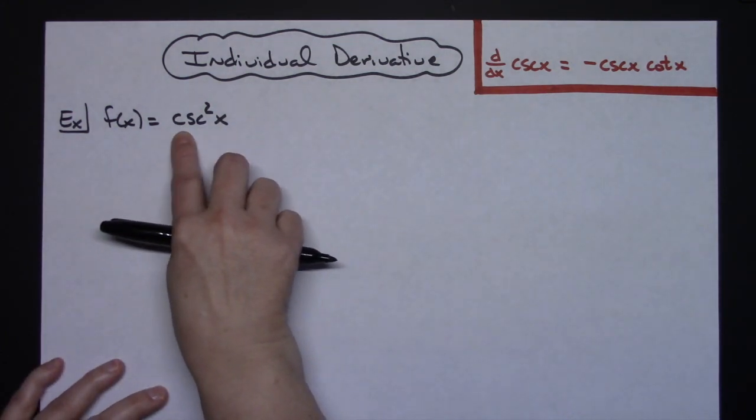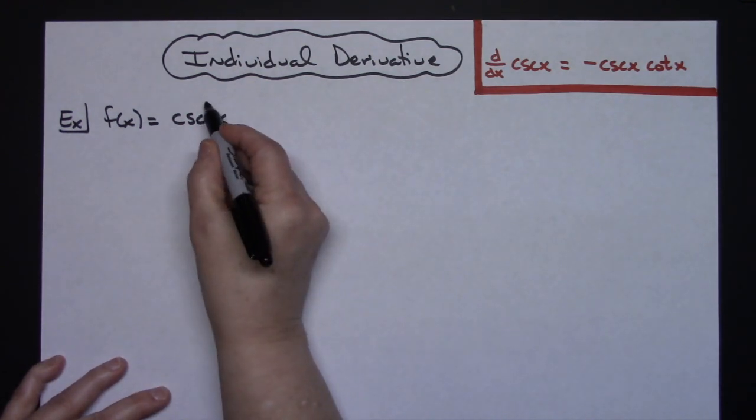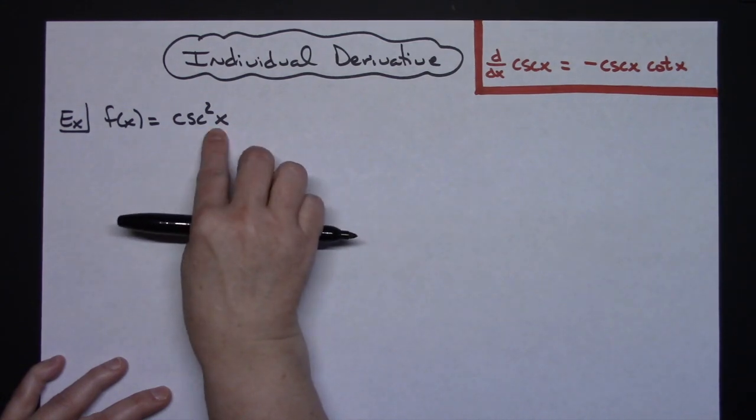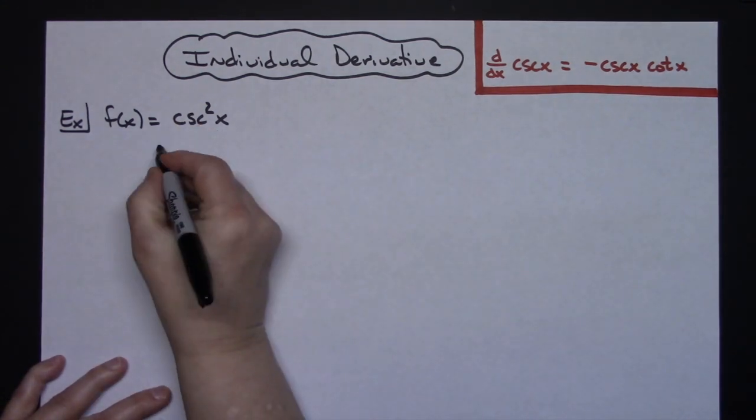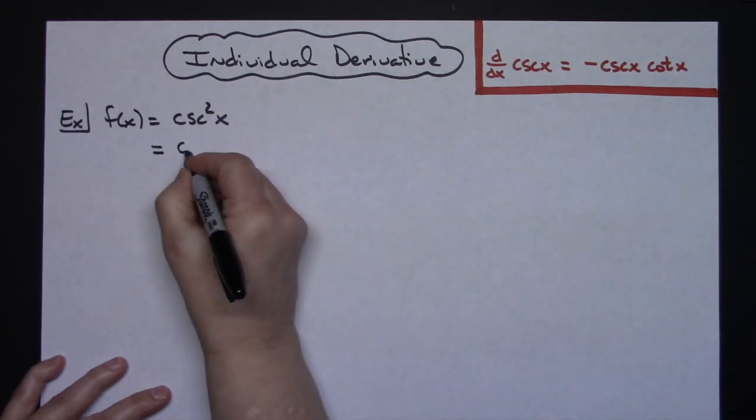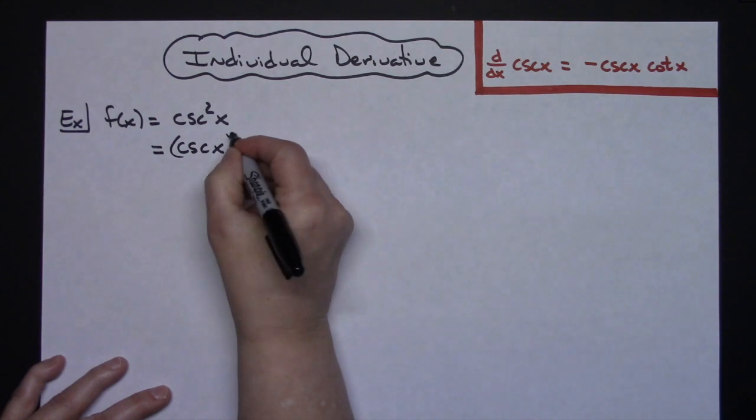Right here I've got cosecant squared x. I generally have my students rewrite this so they can clearly see what that 2 is. That 2 is saying I've got cosecant x times itself. So I'm going to do an algebraic rewrite here. I've got cosecant of x to the second power.